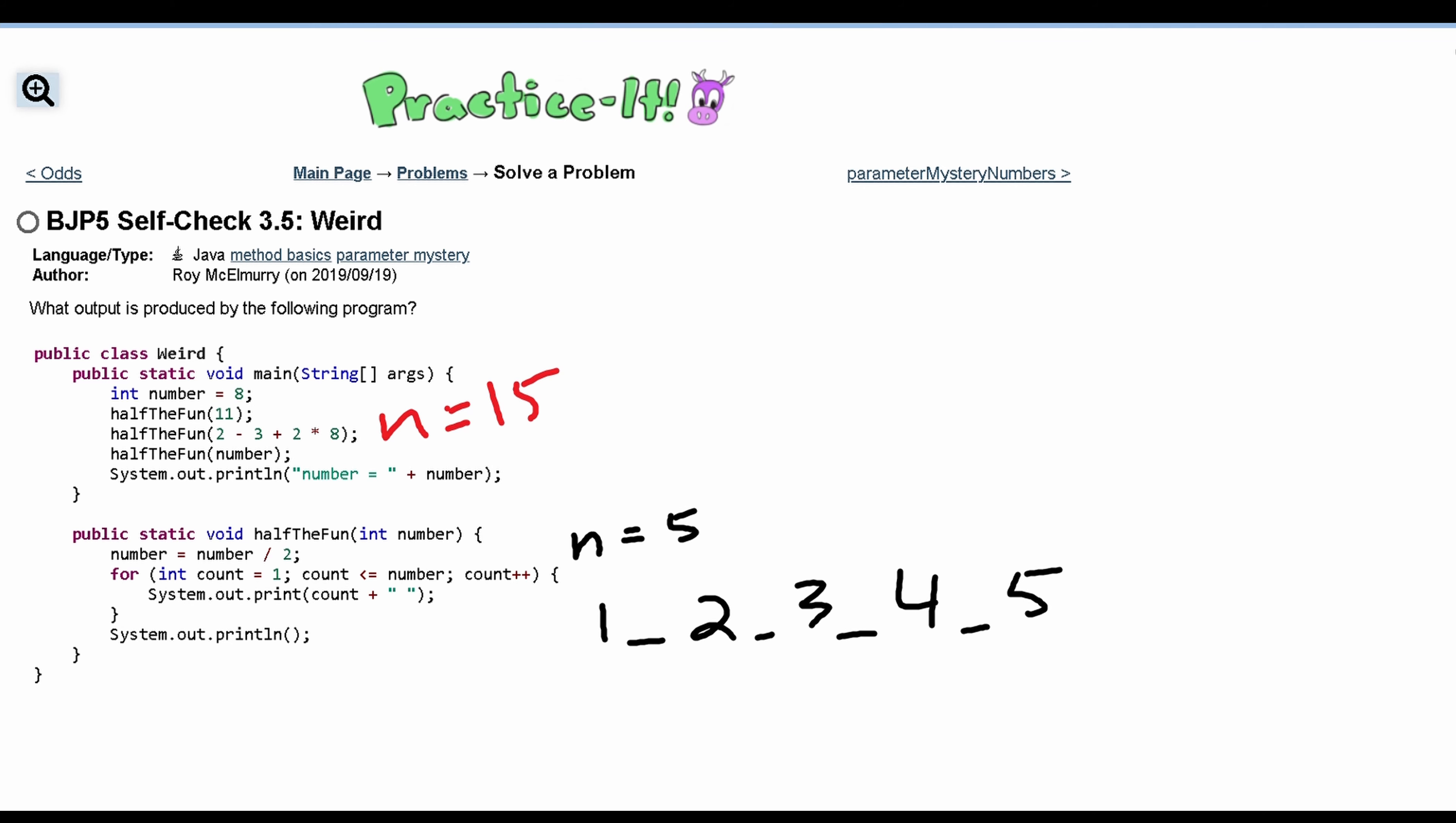Well that means that we're just going to be passing in 1, 2, 3, 4, 5, 6, 7, 8, 9, 10, 11, 12, all the way to 15 in this next line.